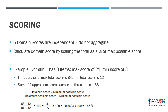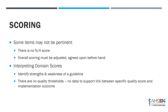A couple of things to know about scoring. First, some items might not be pertinent — there is no 'not applicable' score in the AGREE tool. If you determine ahead of time that a particular question is genuinely not applicable to this guideline — not just poorly done, but truly not relevant — then you can adjust the overall score by removing that item and adjusting the total and minimum potential for that domain accordingly.